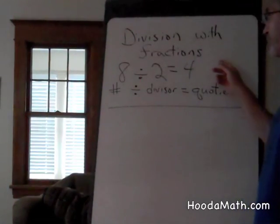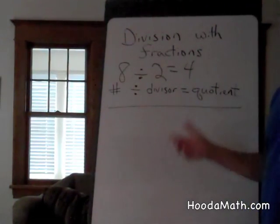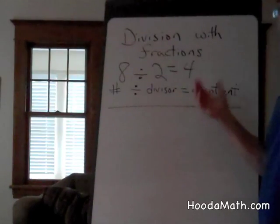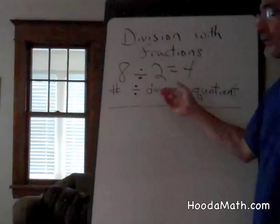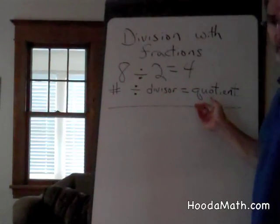Division with fractions is very similar to division with whole numbers. You have an original number, you divide it by the divisor, and you get a quotient.